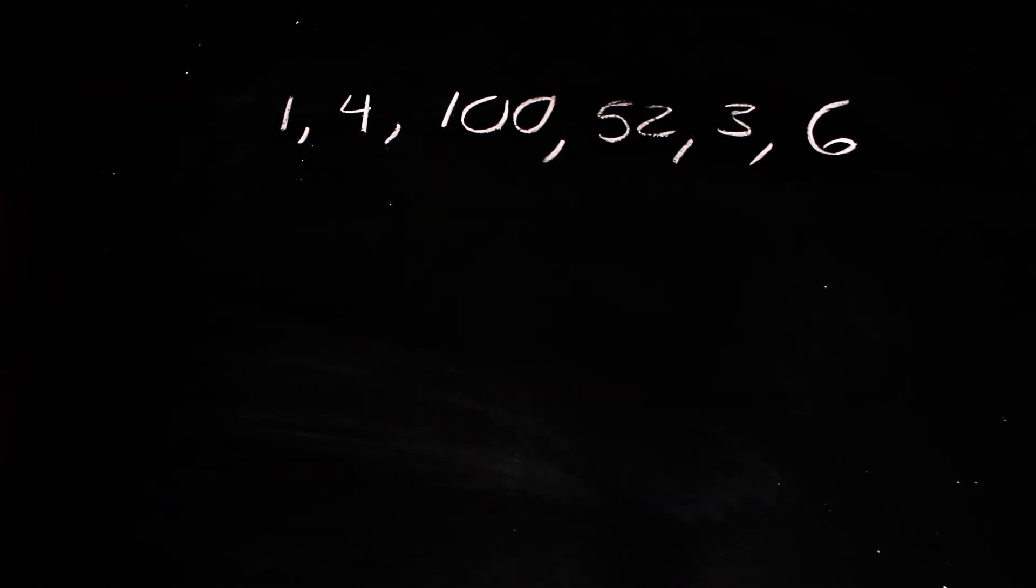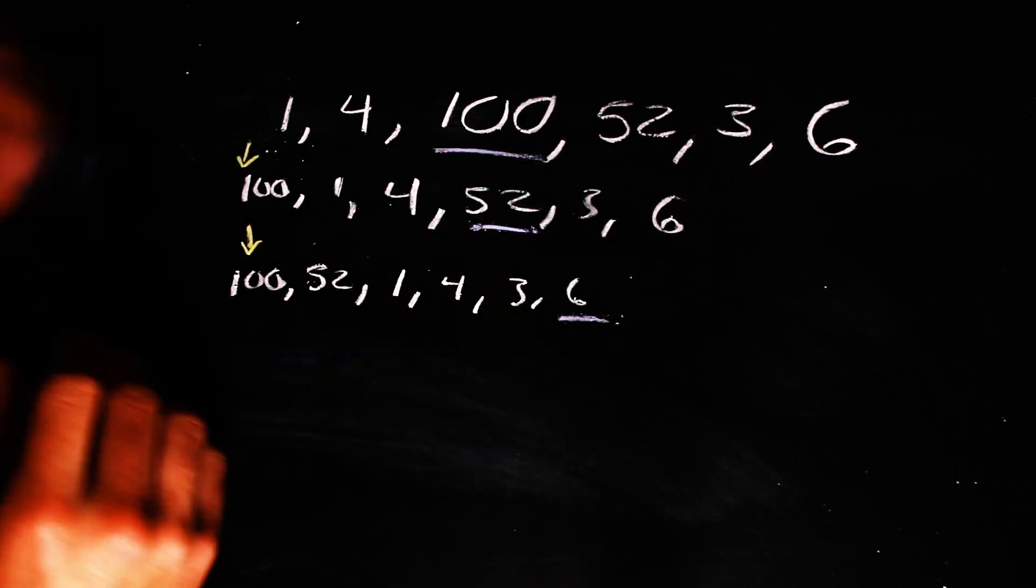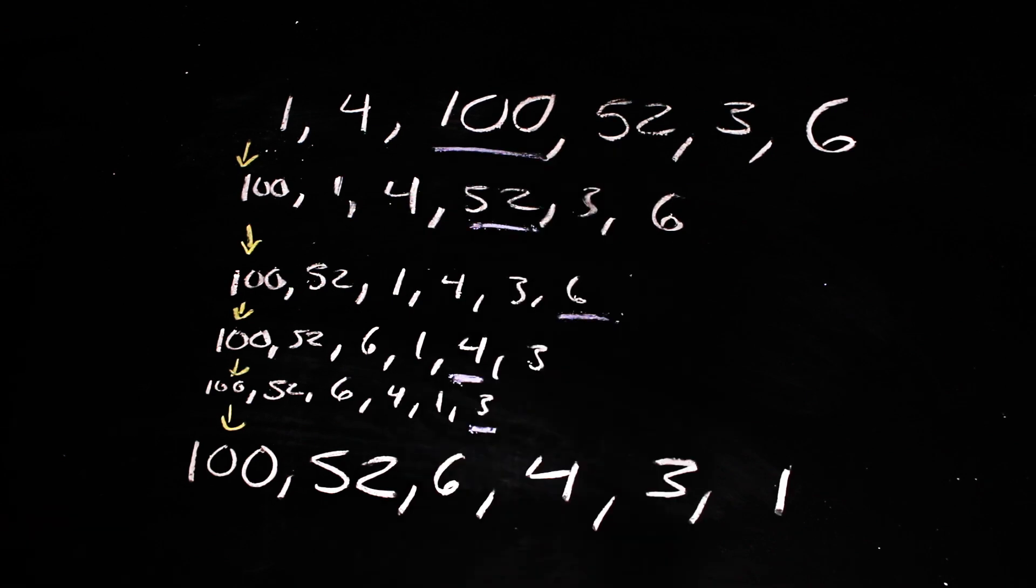the sorting of the numbers 1, 4, 100, 52, 3, and 6 from largest to smallest is a computation. The well-defined model of steps is a bit more open to interpretation in this case, as there are many algorithms or recipes to complete this task, but it is still a computation nonetheless.